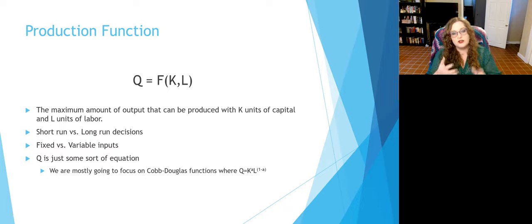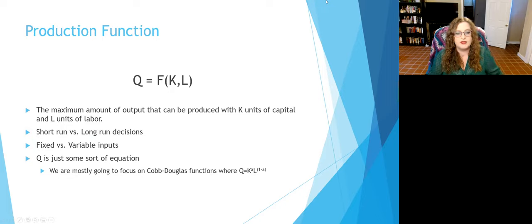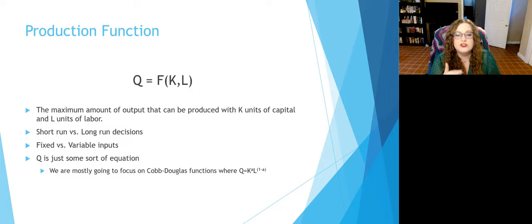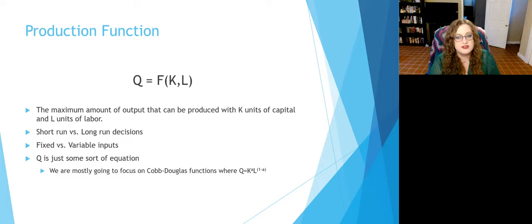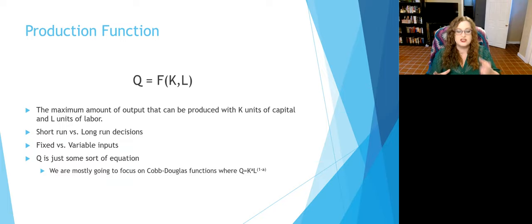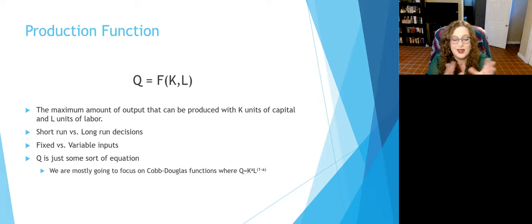We have Q, which represents the amount being produced. That production is some function F, saying there's an equation of the inputs we need to produce that amount Q. Inside the function we have two pieces: K represents capital. The reason we don't use C is because C is used for constants in calculus. Then we have L, units of labor — which depending on the question can be an additional worker, an additional hour worked, or some other measure of labor input.